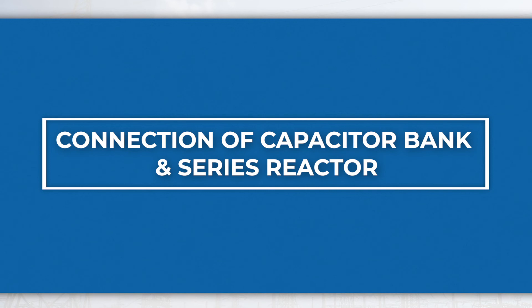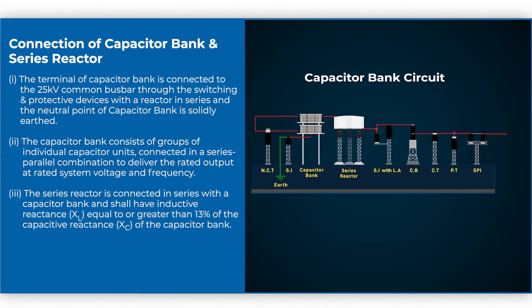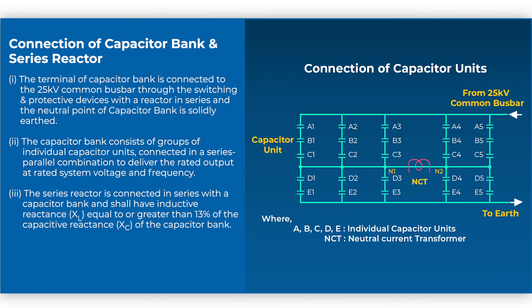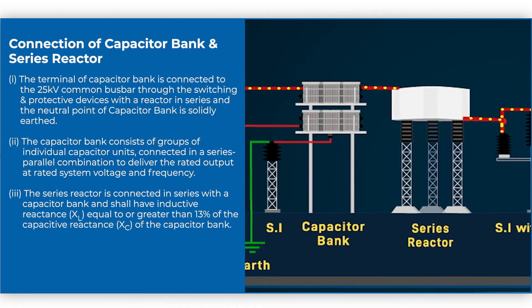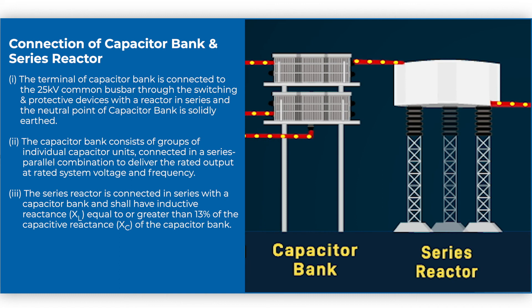The terminal of the capacitor bank is connected to the 25 kV common bus bar through switching and protective devices with a reactor in series, and the neutral point of the capacitor bank is solidly earthed. The capacitor bank consists of groups of individual capacitor units connected in a series-parallel combination to deliver the rated output at rated system voltage and frequency. The series reactor is connected in series with the capacitor bank and shall have inductive reactance equal to or greater than 13% of the capacitive reactance of the capacitor bank.